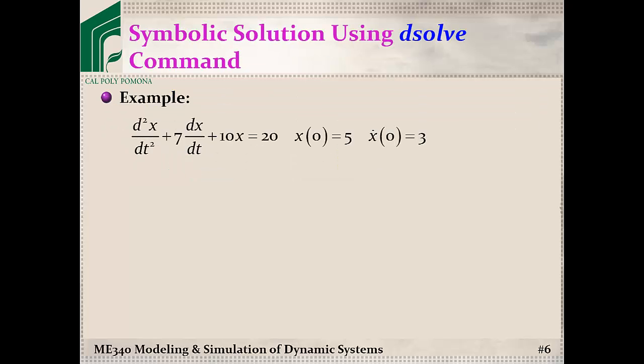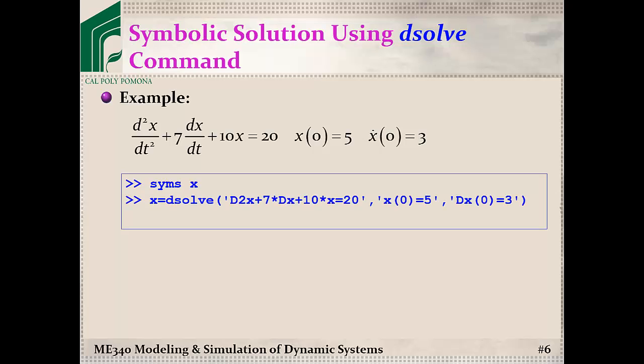Now I'm going to show you how to solve this ODE with the two initial conditions in MATLAB. First, use the syms command to declare x as a symbolic object. Then translate the ODE. The second order derivative becomes D2x, plus 7 times the first order derivative becomes 7*Dx, and then plus 10*x is equal to 20.